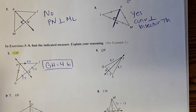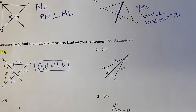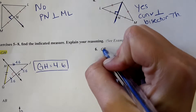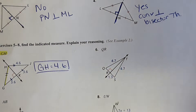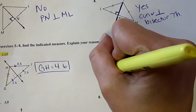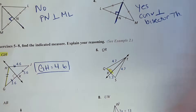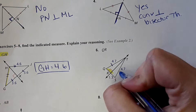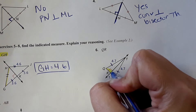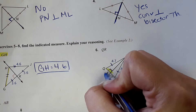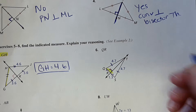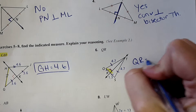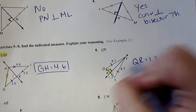Now we repeat. QR — it shows we want to find QR, this length. It shows that this is equal to this and it's perpendicular. So therefore this side is the same length as this one. So QR equals 1.3.